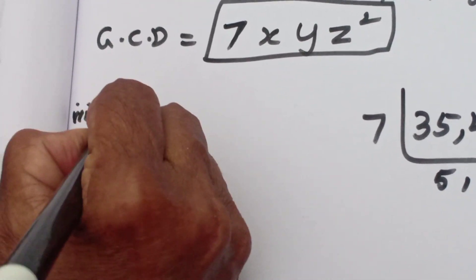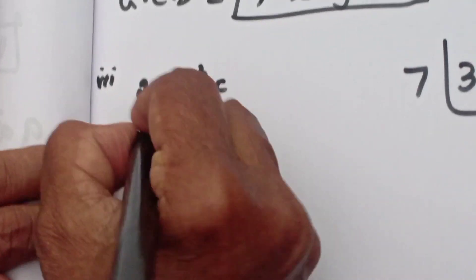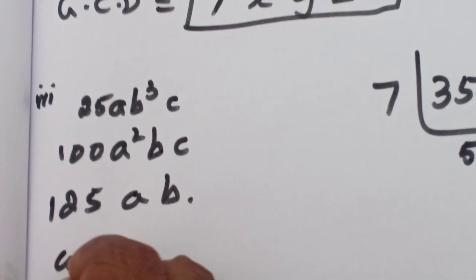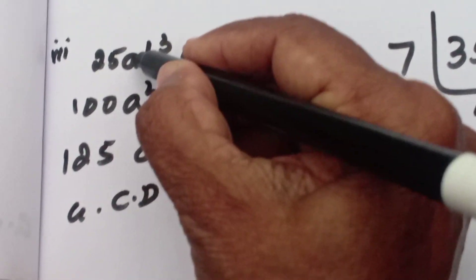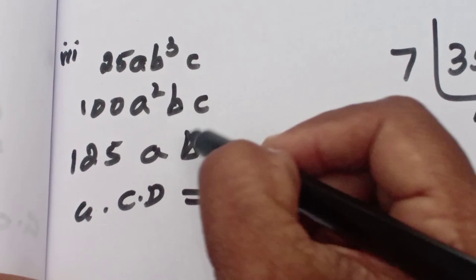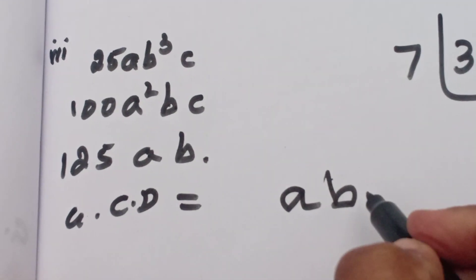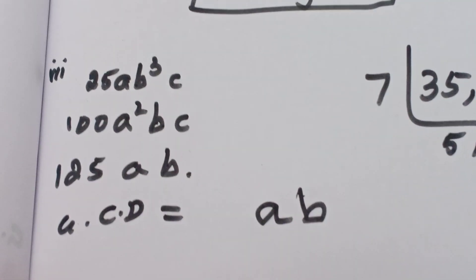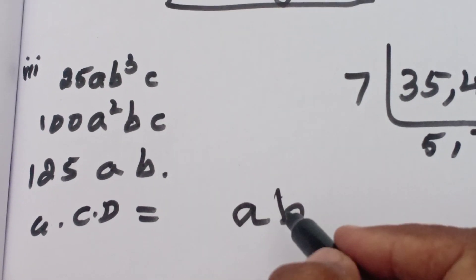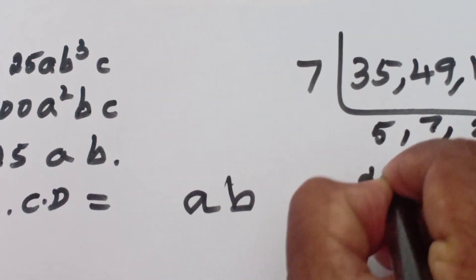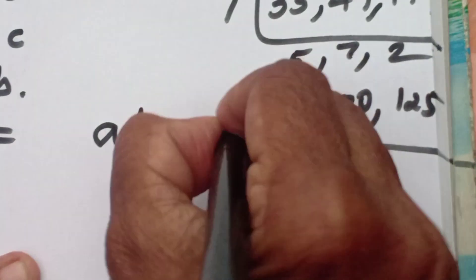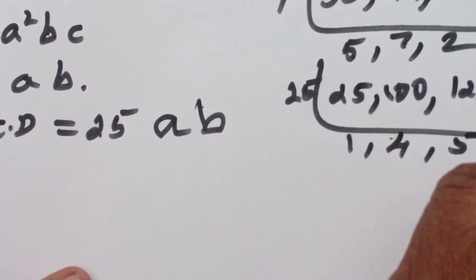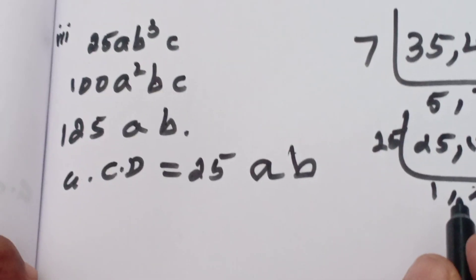Seventh: 25 a b cube c, 100 a squared b c, 125 a b. For variable a: a squared and a — GCD is a. For b: b cube, b, b — GCD is b. For c: c is not present in the third term, so c is not included. For numbers 25, 100, 125 — which table? 25. So GCD of numbers is 25. The GCD is 25 a b. You can also use the 5 table if you want.